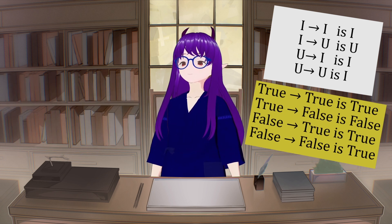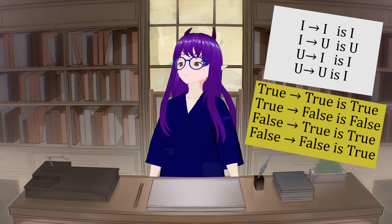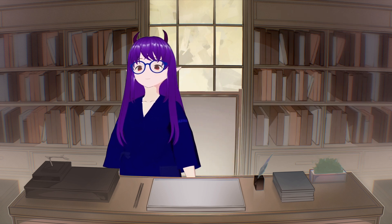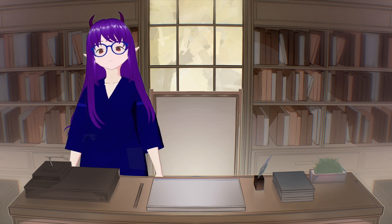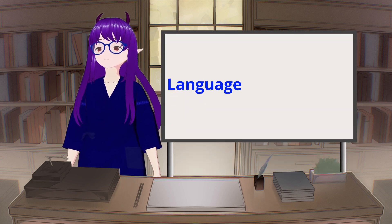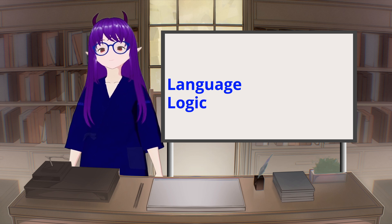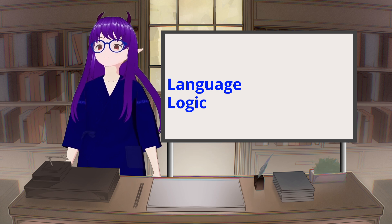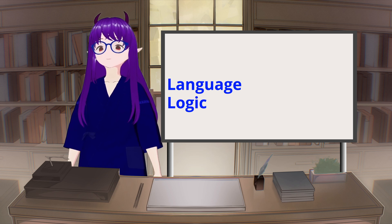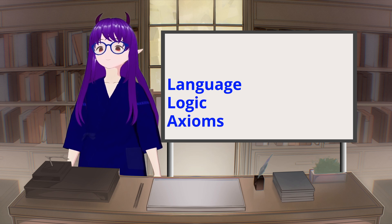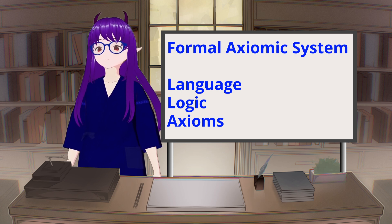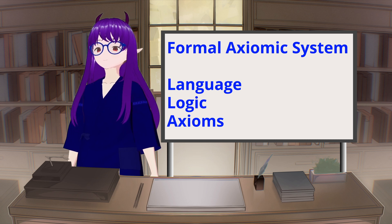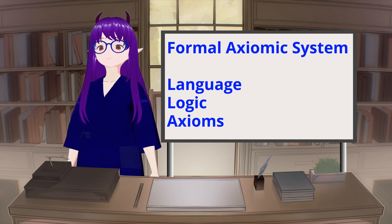As logic became more formalized it shifted away from truth tables toward rules of derivation. In this more formal approach, mathematics is made up of three parts: a language (the symbols and grammar), a logic (the steps between propositions and how truth or falsity of one proposition affects another), and axioms (the starting point from which our logic grows). This is called a formal axiomatic system, or FAS for short. The most popular FAS is ZFC with classical logic, though it is not the only one.